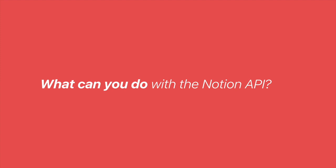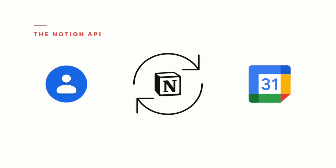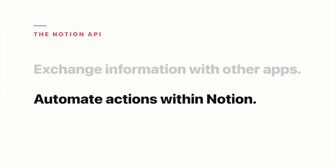The Notion API gives you two overarching capabilities. The first is that you can connect Notion with other apps to exchange information and make updates — where if you make an update in one app, the change is reflected in the other app. That means you can sync your contacts, your calendar events, your expenses, and other information from a variety of sources. And then the API also gives you the ability to create automations within your workspace.